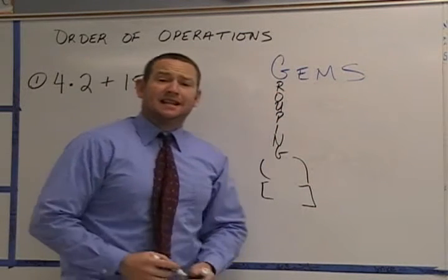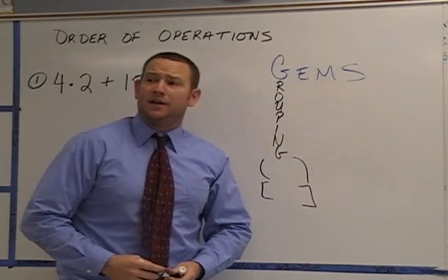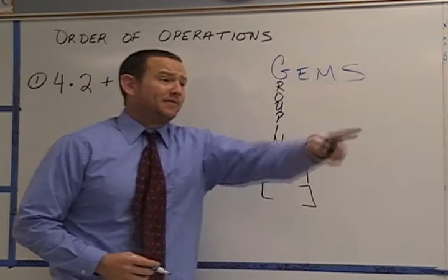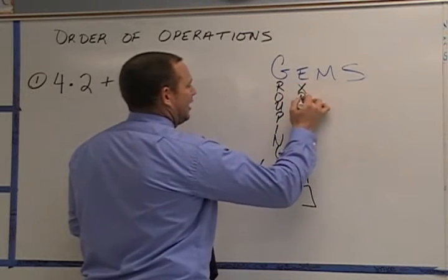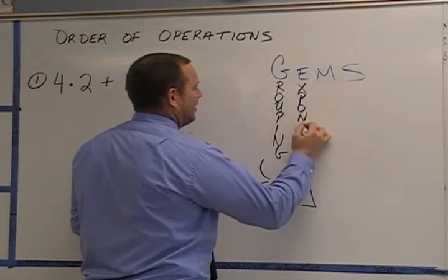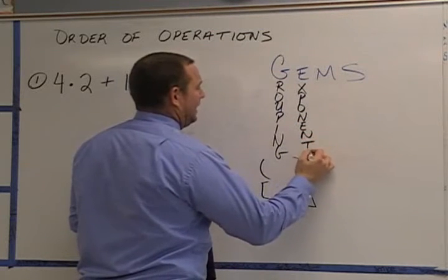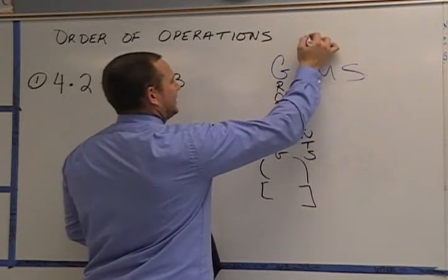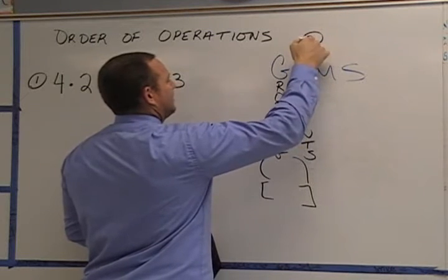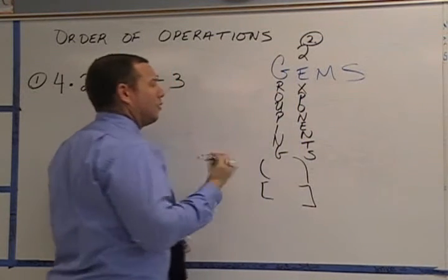Next thing we're going to look at is E, which stands for exponents. Good job. And you guys know what exponents are. If you don't, it's okay. An exponent would be 2 to the second - that is the exponent, which would be 4. That's the exponent or power.